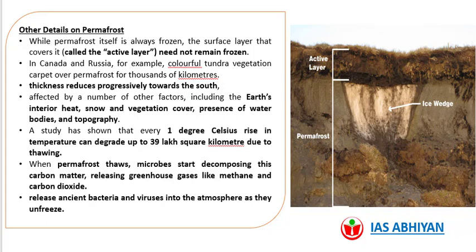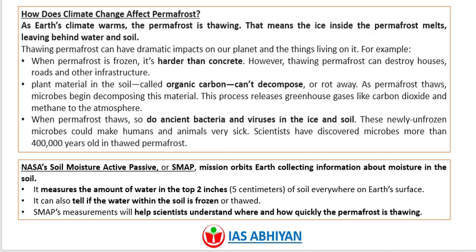Studies have shown that every 1 degree Celsius rise in temperature can degrade up to 39 lakh square kilometers of permafrost due to thawing. When permafrost thaws, microbes start decomposing the carbon matter, releasing greenhouse gases like methane and carbon dioxide. They also release ancient bacteria and viruses into the atmosphere as they unfreeze.